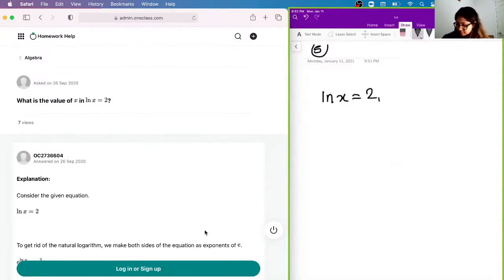And so, what is x equal to? To get rid of the natural logarithm, we make both sides of the equation as exponents of e to get rid of the log.